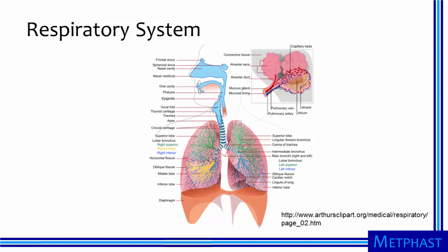On this diagram, I want to point out the three different regions of the human respiratory system. First, there is the nasal pharyngeal-laryngeal region, which encompasses the nasal cavity and the oral cavity just beyond the nose and mouth, the pharynx in the back of the throat where the two cavities come together, and the larynx, the voice box, just beyond the epiglottis — the flap that separates the respiratory system from the digestive system.